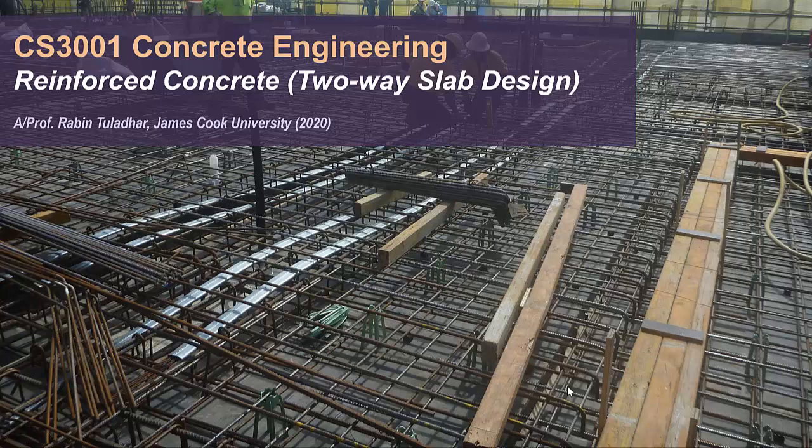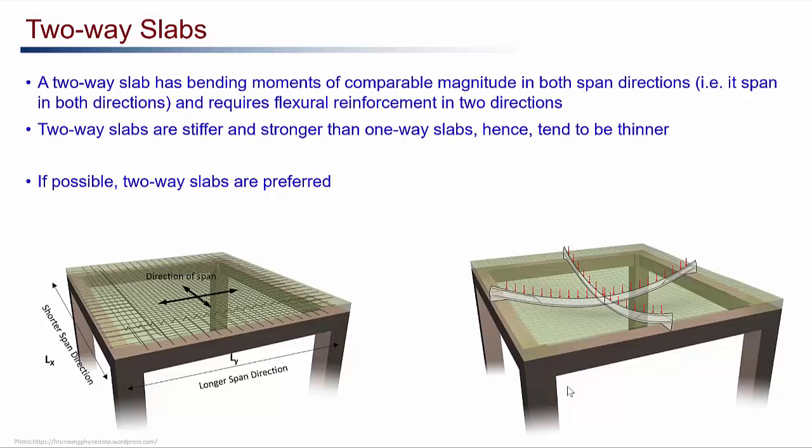We will look into the design of the reinforced concrete two-way slab. As discussed earlier, the two-way slab is resting on all four sides on beams, columns, or walls. Since it rests on all four sides, it bends in both x and y directions. There is significant bending moment in both x and y directions, so we have to provide flexural reinforcement in both the shorter and longer directions. Two-way slabs are usually stiffer and stronger than one-way slabs, and hence they tend to be thinner.